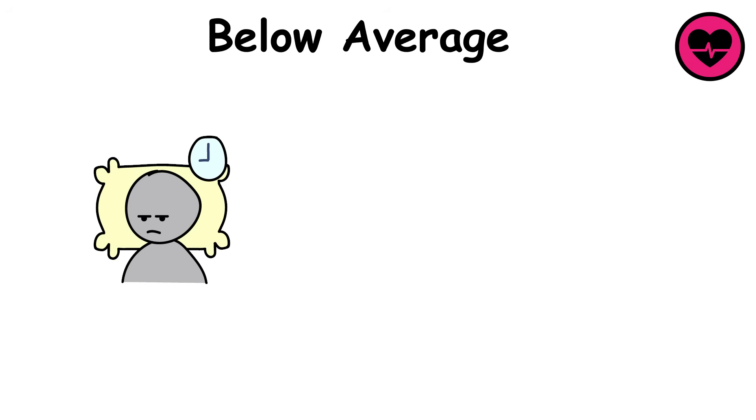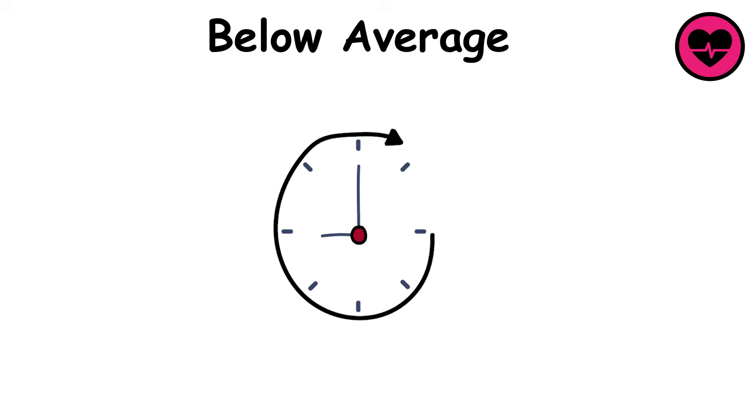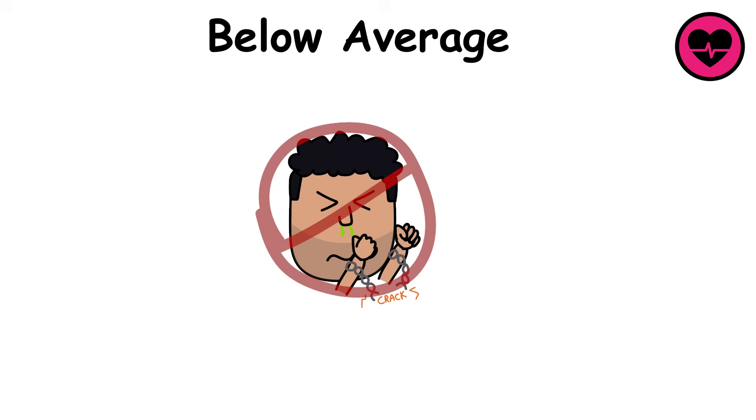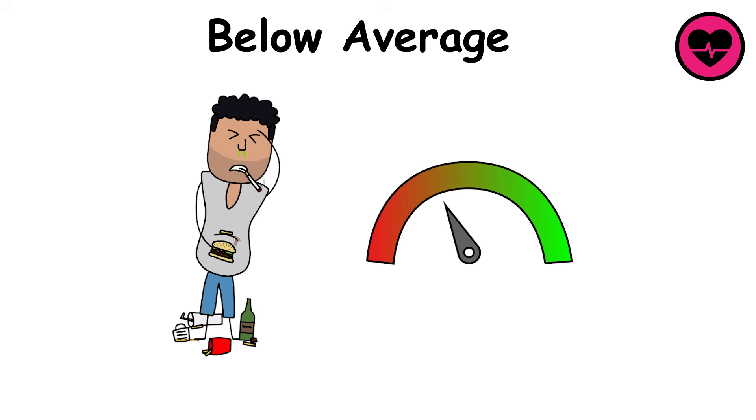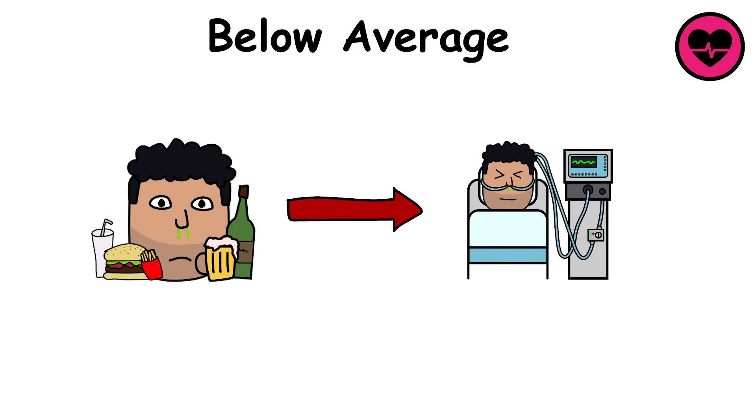Sleep may be restless, weight may creep upward, and stress feels harder to handle. Doctors might start warning about early signs of chronic problems, like high blood pressure or diabetes. While independence is not in question, the body is running below its potential. Below average health is a reminder that neglect today often becomes illness tomorrow.